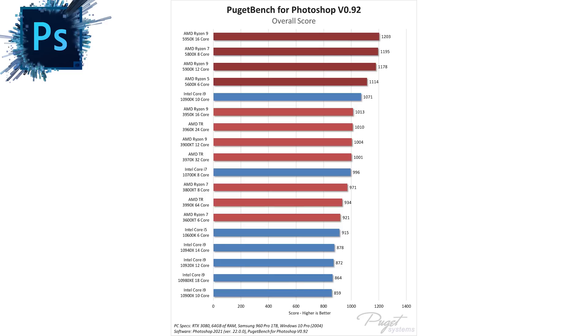First of all, Adobe Photoshop. In the past there were arguments for both sides, Intel or AMD. But now since the 5000 processor release, there is no real reason to recommend Intel because AMD takes such a big leap forward in the benchmarks. Photoshop doesn't scale well with more cores — high clock speeds and single-threaded performance are what matter. For that reason, even the six-core 5600X is faster than the Intel 10900K.